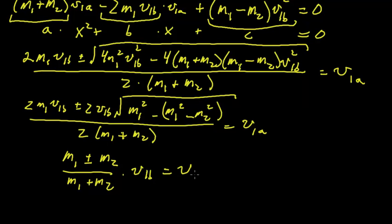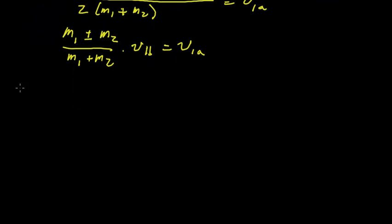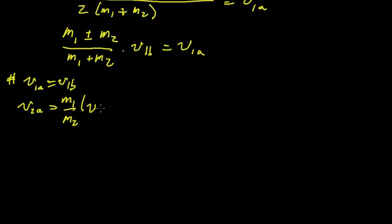There are two solutions. Solution one uses the plus sign: M1 plus M2 over M1 plus M2, so V1_afterward equals V1_before. Plugging back in, V2_afterward equals M1 over M2 times (V1_before minus V1_afterward) equals zero. This means the first object just keeps going and passes right through the second object with no effect — the trivial, unphysical solution. We don't use that one.